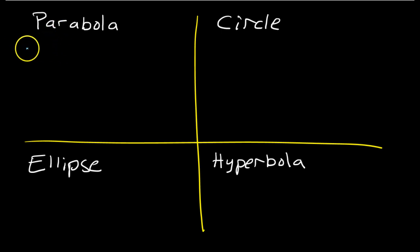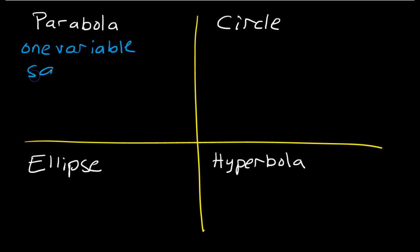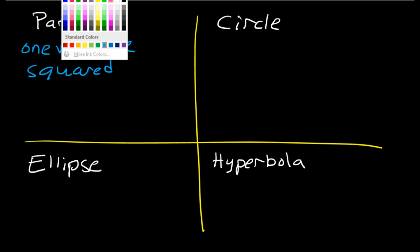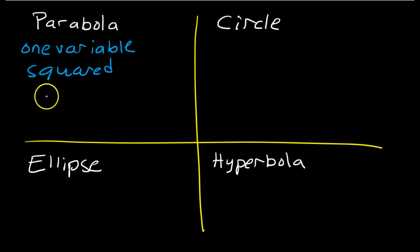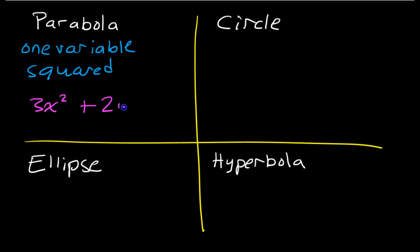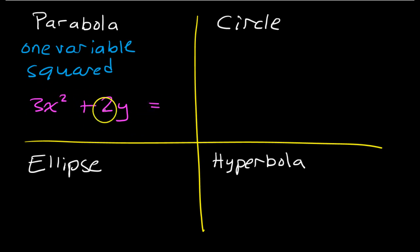For a parabola, you're only going to have one variable squared. For example, you might have 3x squared, and then that'll be the only thing squared — maybe the y term is just a 2y. But you're only going to have one variable squared, and you know it's a parabola.